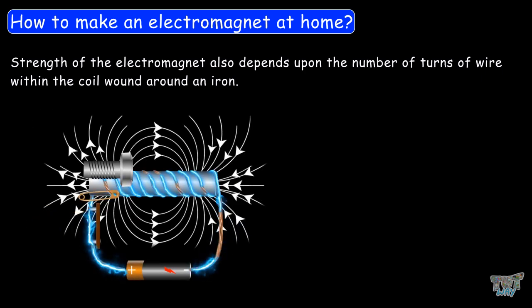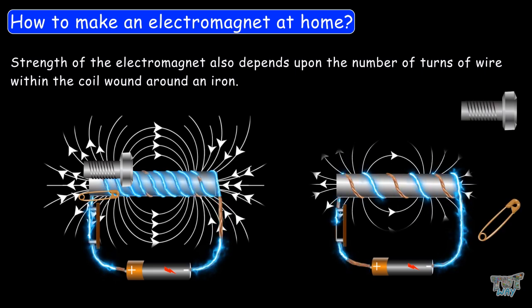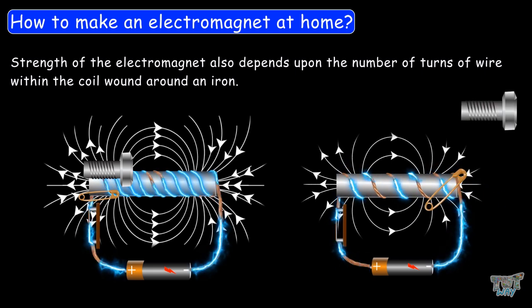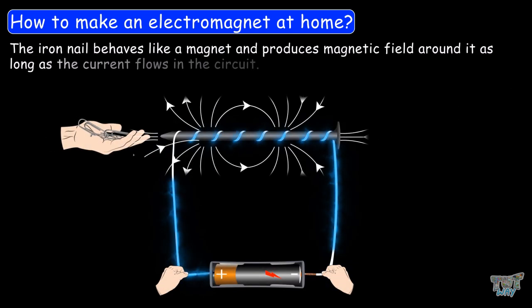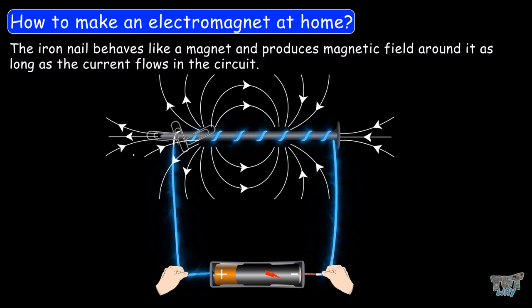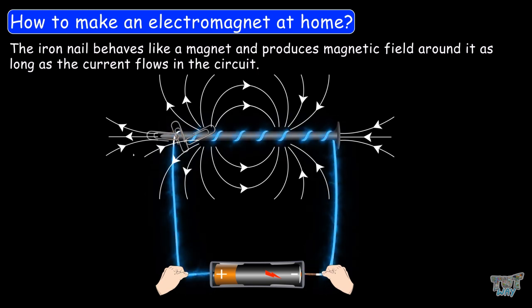The strength of the electromagnet also depends upon the number of turns of wire within the coil wound around the iron. If we increase the number of turns, the strength of the electromagnet increases; if we decrease the number of turns, the strength decreases. The iron nail behaves like a magnet and produces a magnetic field as long as the current flows in the circuit. So we have learned how electricity can be used to produce magnetism. Thank you.